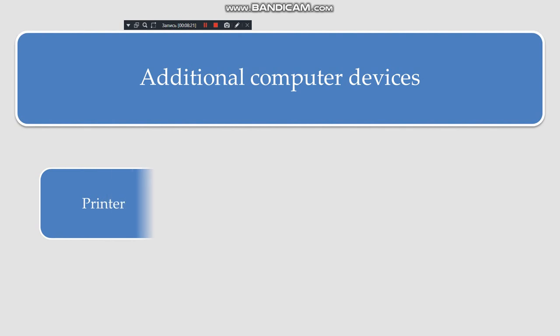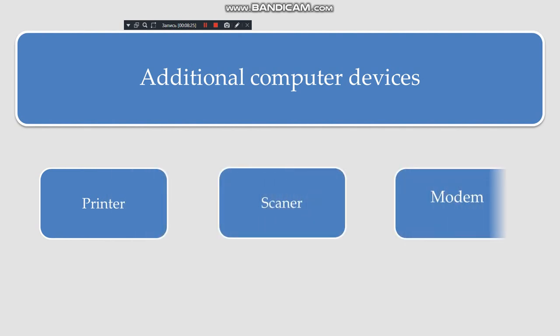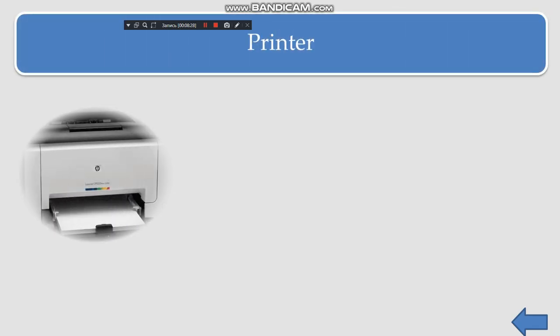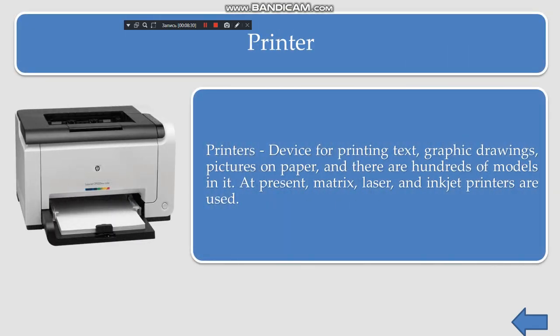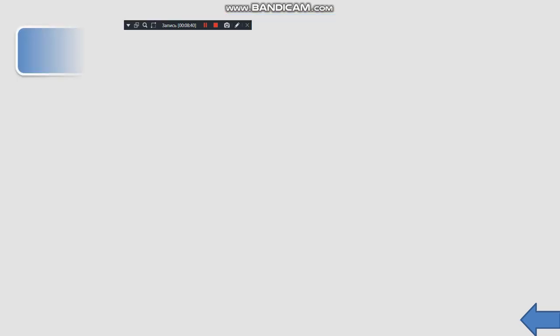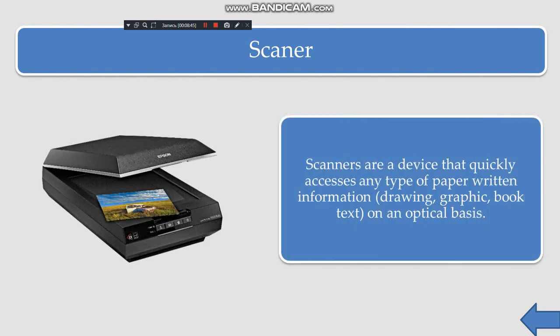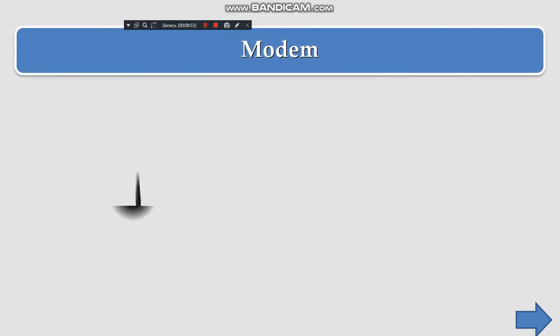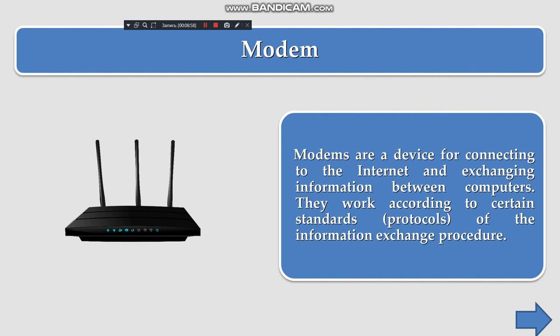Additional devices include the printer, scanner, and modem. A printer is a device for printing text, graphics, drawings, and pictures on paper; at present, matrix, laser, and inkjet printers are used. A scanner is a device that quickly accesses any type of paper-based information — writing, drawings, graphics, books, and text — and converts it on an optical basis. A modem is a device that connects to the internet and exchanges information between computers according to certain standards of the information exchange procedure.